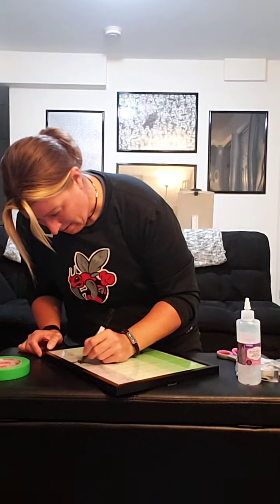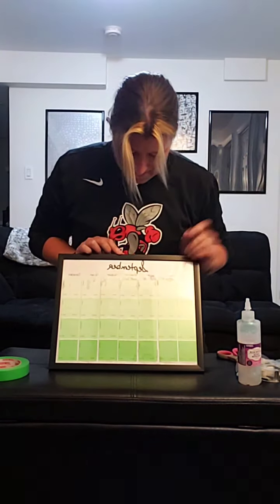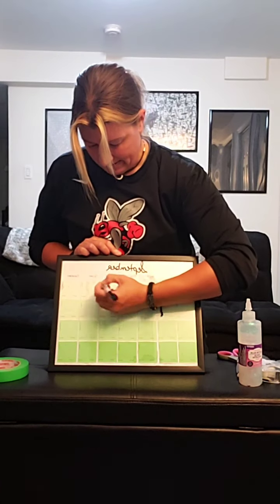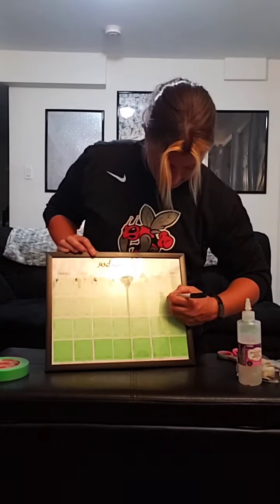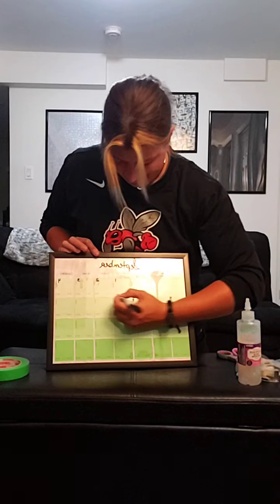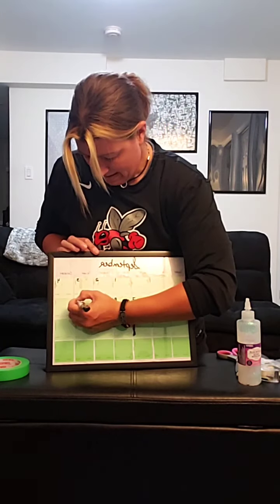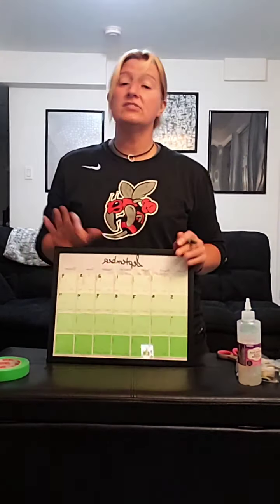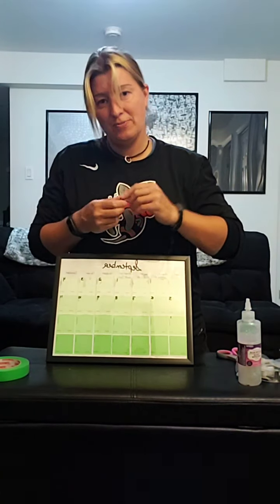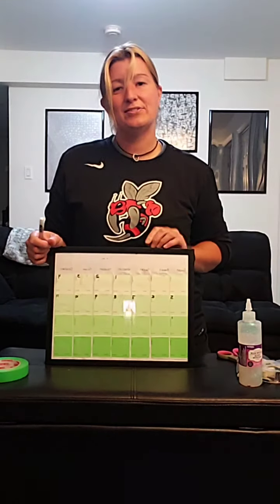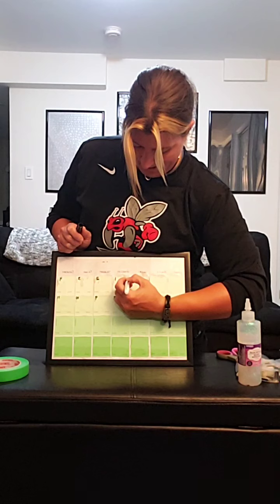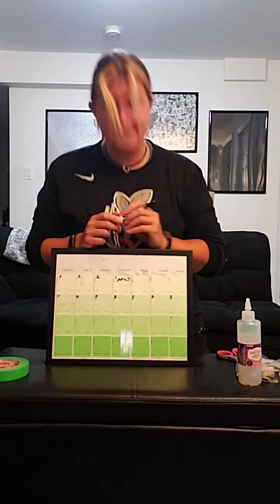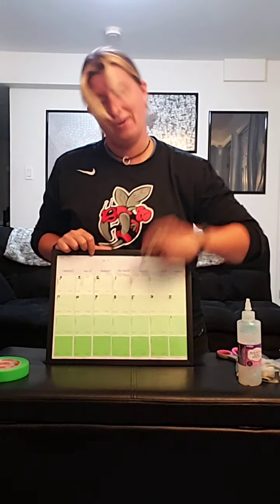I can write September across the top with my dry erase marker, and now I can fill in the dates. September 1st is a Wednesday, Thursday is the 2nd, Friday is the 3rd, 4th, 5th, and so on all the way through September. When it comes to October, all you have to do is wipe that off with a cloth and start over again writing October and figuring out those dates. With the dry erase markers you can also put all your assignments in there — say you have an exam on September 1st — and that can get wiped off as well, so it's not permanent.